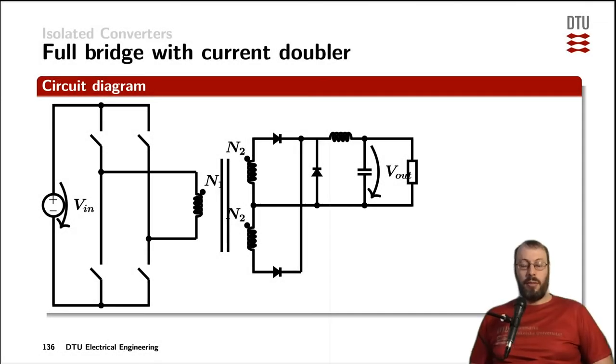Now, we first had a look at the flyback converter, where we have one primary switch. The application range for flyback converter is approximately up to around 100, 200, maybe 300 watts.